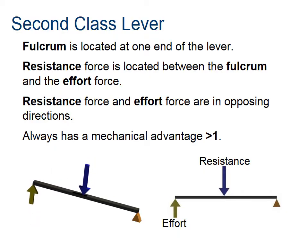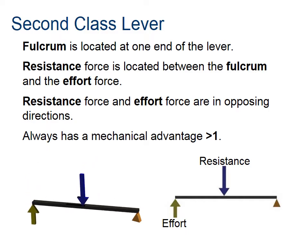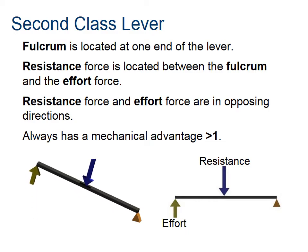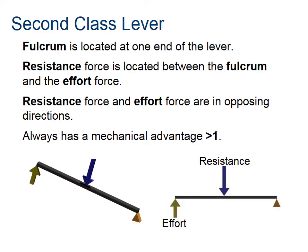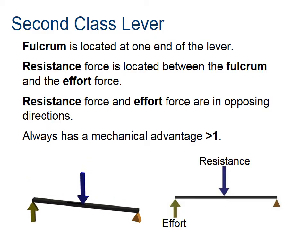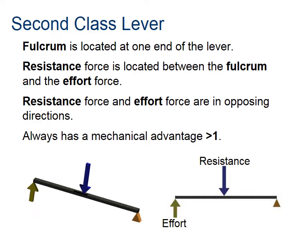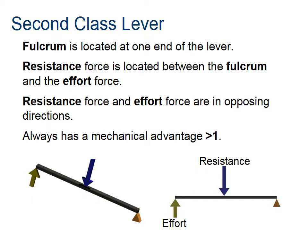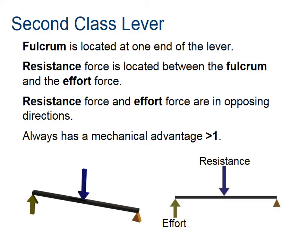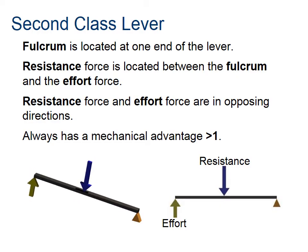In a second class lever, the fulcrum or pivot is at one end, the resistance force is in the middle, and the effort force and resistance force point in opposite directions — unlike the first class lever where they both go in the same direction. One important thing to know about second class levers is that the mechanical advantage is always greater than one.